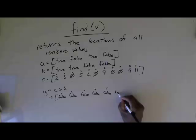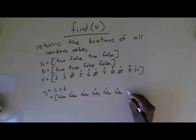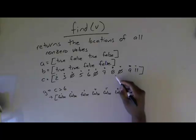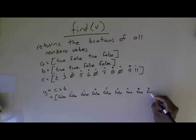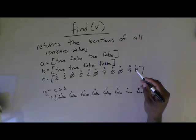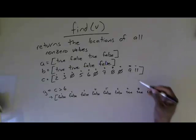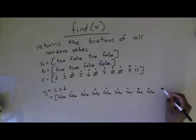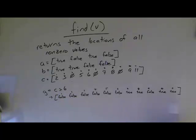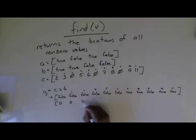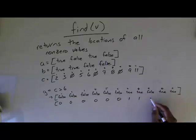Continuing element by element: zero at index 6 is not greater than six, so that's false. Seven is greater than six, so in slot seven we get true. Eight is greater than six, so in slot eight we get true. Zero at index nine is not greater than six, so we get false. Nine is greater than six, so slot ten gets true. Eleven is greater than six, so slot eleven gets true. In MATLAB notation, G becomes [0, 0, 0, 0, 0, 0, 1, 1, 0, 1, 1].